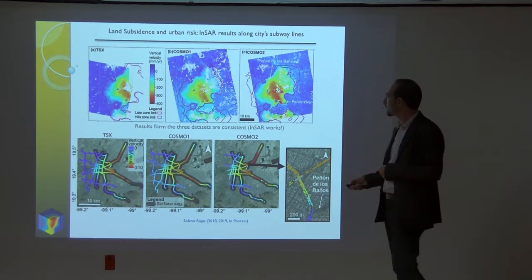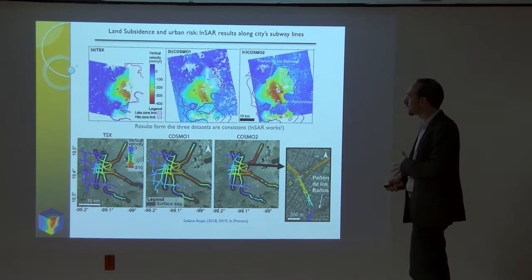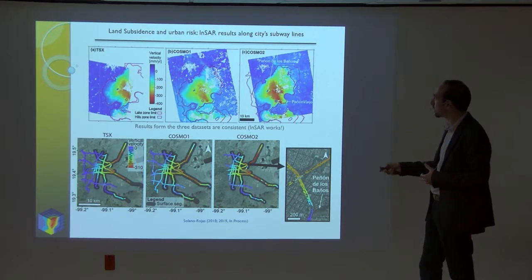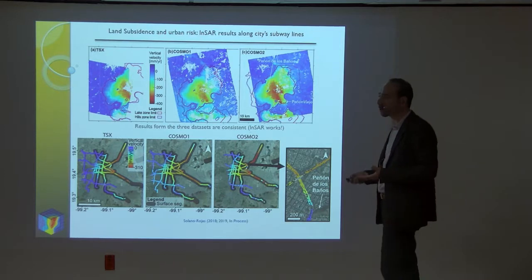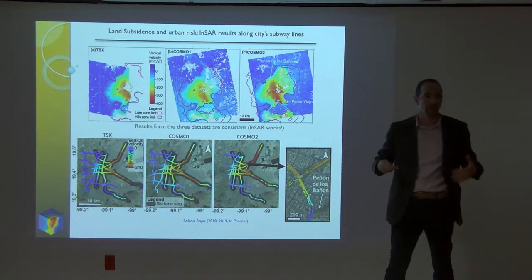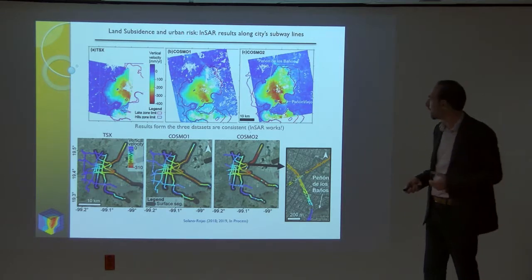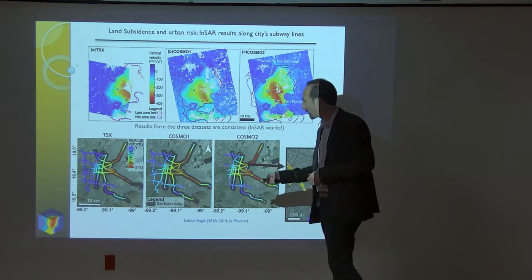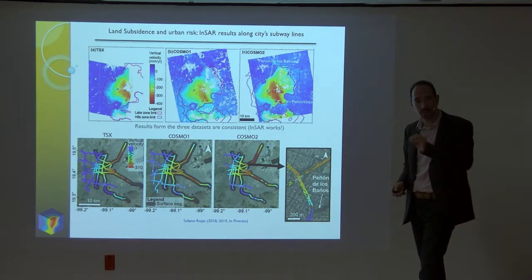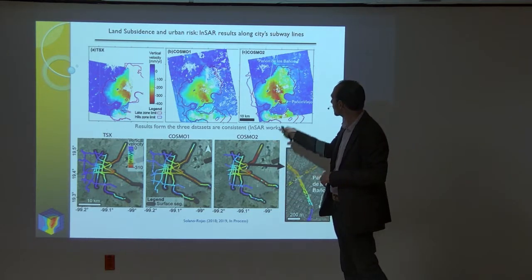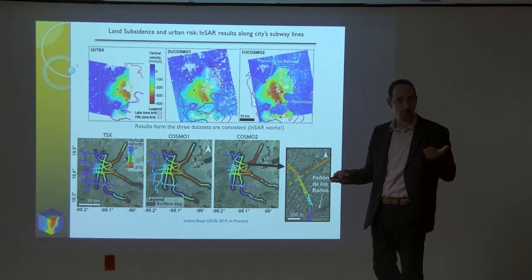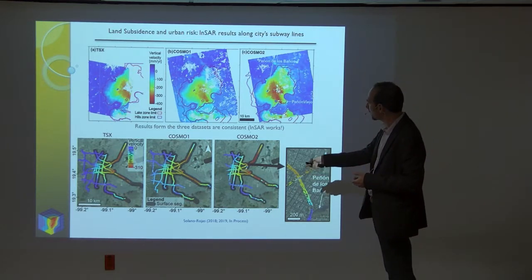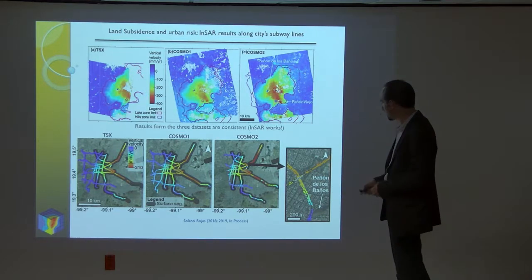Darío is also exploring several InSAR datasets — comparing TSX, Cosmo 1, and Cosmo 2 — to better assess subsidence processes. There appears to be a good correlation, concluding that InSAR works as a reliable technology for assessing subsidence values. Surprisingly, he's using this analysis to assess in a very detailed way the subsidence processes along the subway lines in Mexico City, where differential subsidence is quite common. Darío is trying to monitor the vertical velocity of subsidence along the subway lines with very good results.